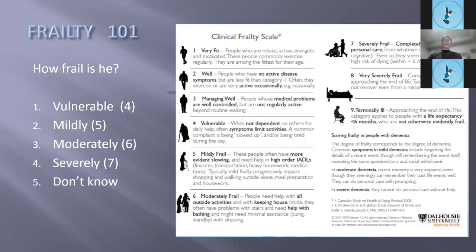We can see a big shift in how people change their answers with additional information. That's the idea behind getting collateral information with frailty — it's called collateral information. When people say something, you need to trust and verify. What the person says needs to be corroborated by a third party, because frailty is often unrecognized when the person thinks they're doing better than they are.